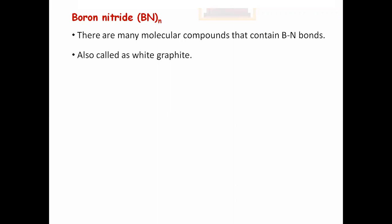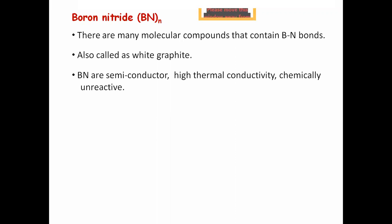These boron nitrides are also called white graphite because their structure is similar to graphite. However, the color is white while graphite is black or green in color.